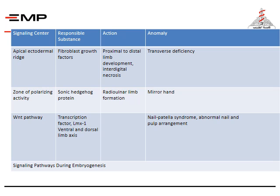The apical ectodermal ridge: the responsible substance is the fibroblast growth factor. Its action is proximal to distal limb development and interdigital necrosis. Its deficiency causes transverse deficiency.